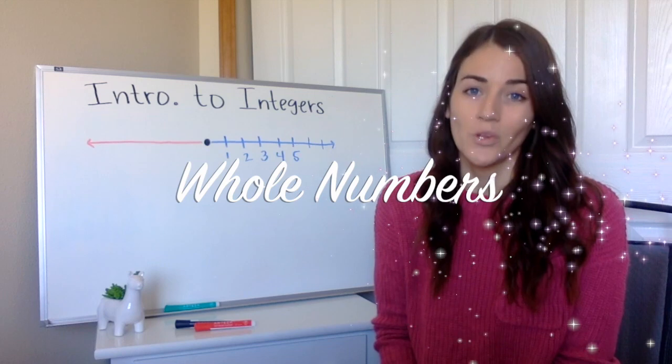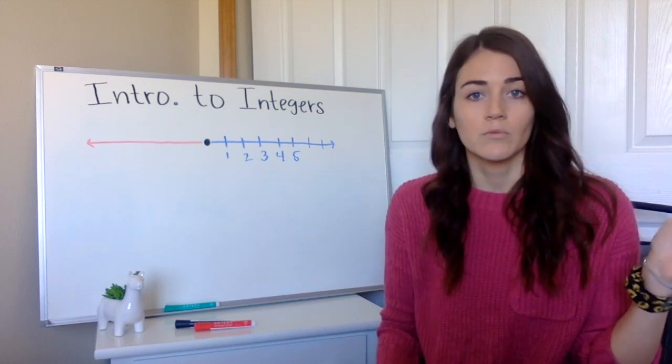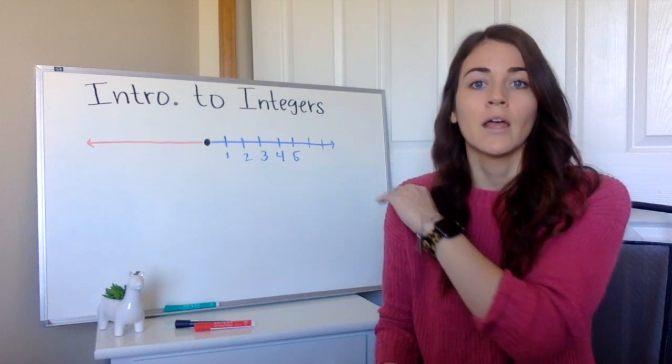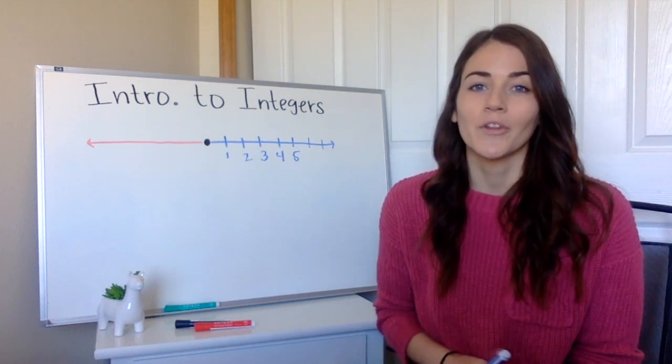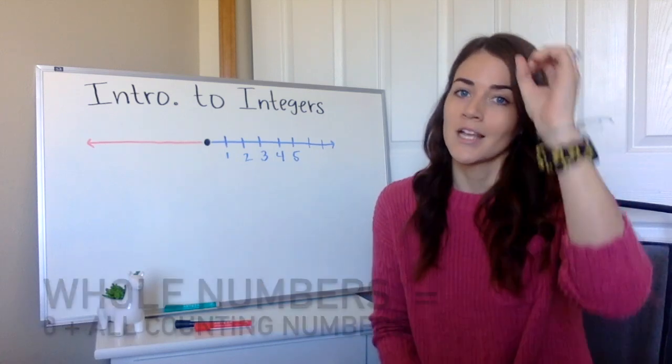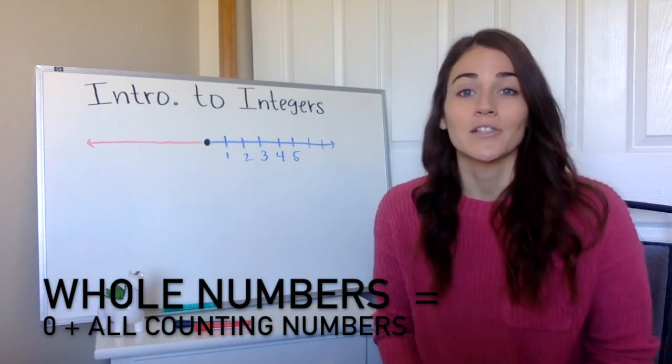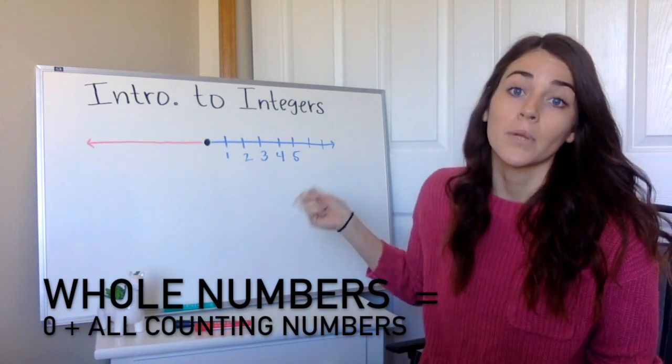After counting numbers, we have our whole numbers. So whole numbers are all of our counting numbers plus one extra number. So the way I like to remember this, if you eat the whole pie, how much of it do you have left? Zero. So our whole numbers are all of those positive counting numbers plus zero.